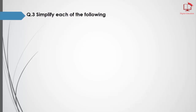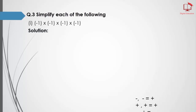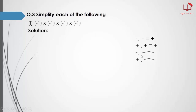Question number 3: simplify each of the following. Part number 1: we have integers and we will multiply them by each other. If we have two minus signs and multiply them we get a positive sign. If we multiply two positive signs the result is plus. If the first is negative and the second is positive, or the first is positive and the second is negative, the result is minus.